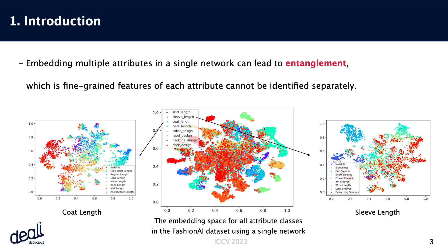Embedding multiple attributes into a single network can lead to a complex challenge known as entanglement. This means that the intricate details and specific characteristics of each attribute become intertwined and difficult to distinguish. The central image illustrates the embedding space that encompasses all attribute classes found in the Fashion AI dataset. On the left, we zoom in on one specific attribute, namely coat length, to highlight the challenge of disentanglement.